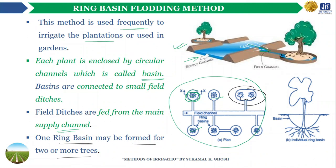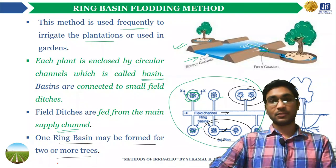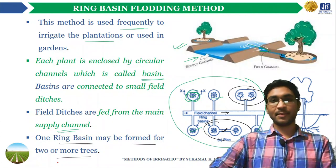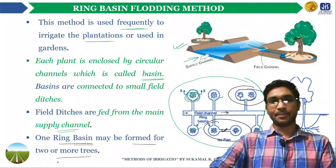Sometimes small ditches connect two ring basins. This concludes the discussion on the flooding method of irrigation. In our next lecture, we will discuss the remaining techniques and methods of irrigation. Till then, stay safe and stay happy. Thank you.